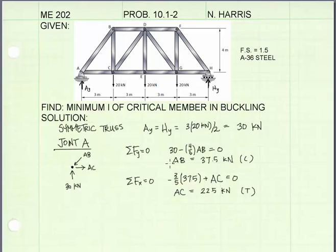It's in compression. So I'll note that with the letter C. Summing the forces in the x direction, we can solve for AC. That's equal to 22.5 kilonewtons, and it's in tension.